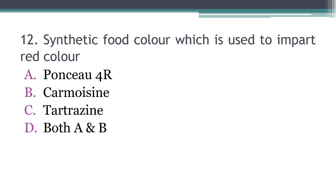Twelfth question: Synthetic food color which is used to impart red color. Ponceau 4R, carmoisin, tetrazine, or both A and B? The answer is D - both A and B. Ponceau 4R and carmoisin are used to impart red color.